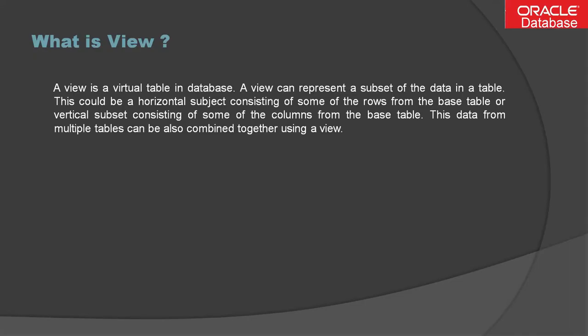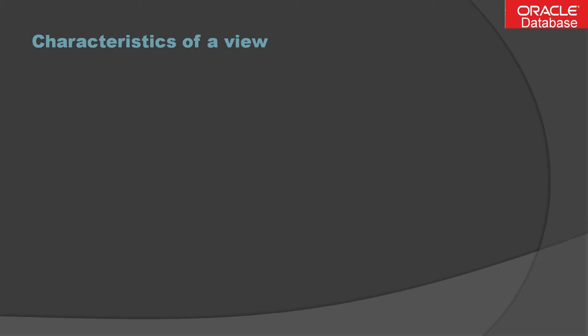A view is a virtual table in a database. A view can represent a subset of the data in a table — this could be a horizontal subset consisting of some rows from the base table, or a vertical subset consisting of some columns from the base table. Data from multiple tables can also be combined together using a view. You can create a view from a single table or multiple tables. It is just a virtual table — not an actual or physical table in the database.